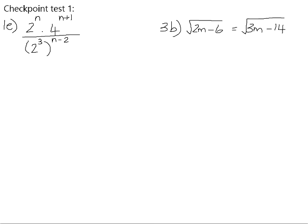Then use your laws of exponents to simplify. So we can see that 2 is a prime number, but 4 is not a prime number, so we need to start off by writing 4 as a product of prime numbers. 4 is actually 2 squared, so it will be 2 squared to the power of n plus 1.